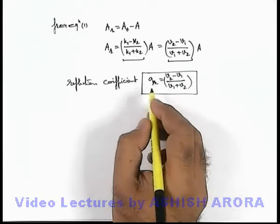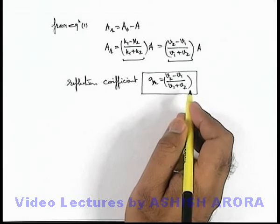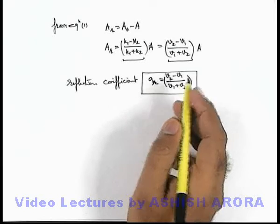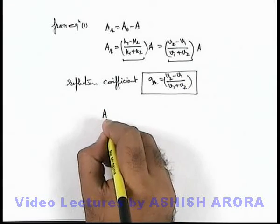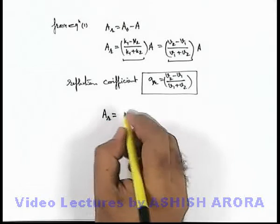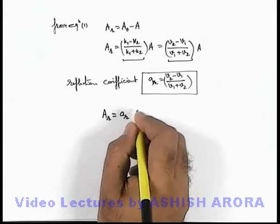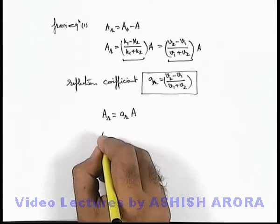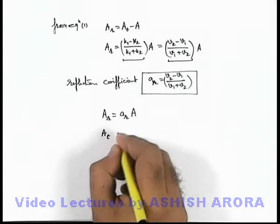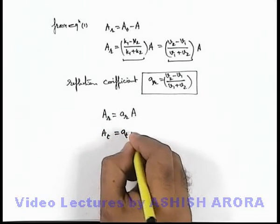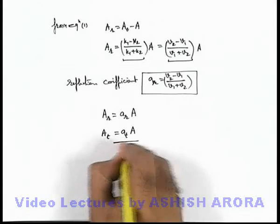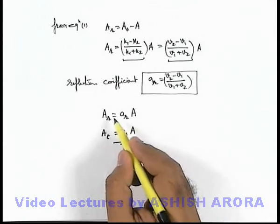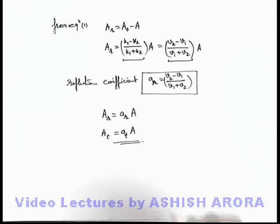These transmission and reflection coefficients are directly used to calculate the amplitudes of transmitted and reflected waves. The amplitude of the reflected wave equals the reflection coefficient multiplied by the amplitude of the incident wave, and the amplitude of the transmitted wave equals the transmission coefficient multiplied by the amplitude of the incident wave. This is how we find out the amplitudes of reflected and transmitted waves.